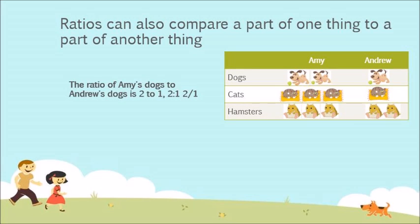Ratios can also compare a part of one thing to a part of another. Here we're going to do the ratio of Amy's dogs to Andrew's dogs. That is 2 to 1, 2:1, or 2/1.